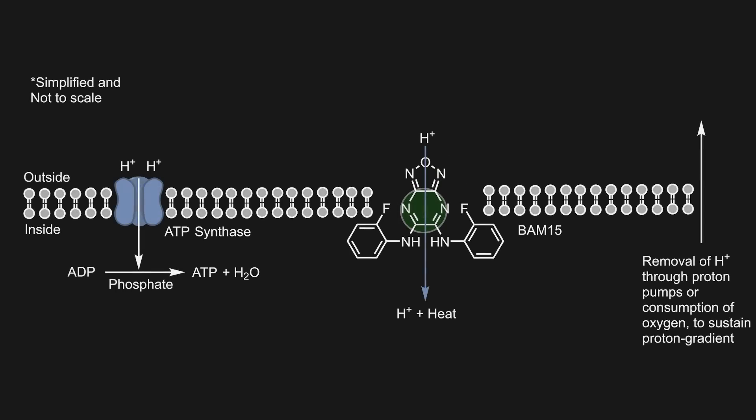The BAM-15 molecules essentially create holes in the lipid bilayer of the mitochondria, through which proton leaks take place. This generates heat because the concentration of protons outside the layer is higher than inside.